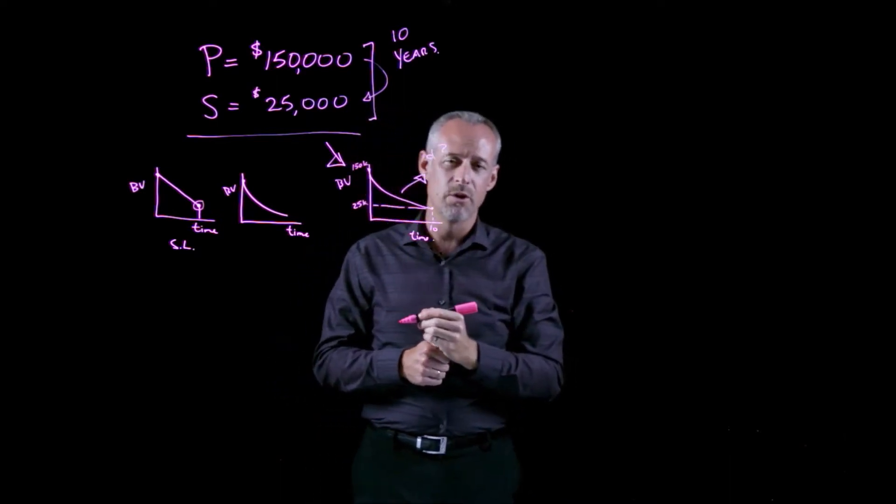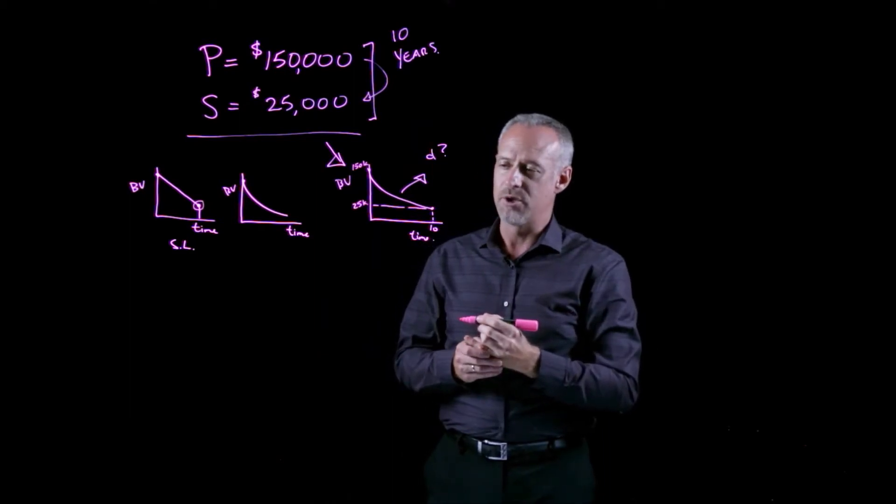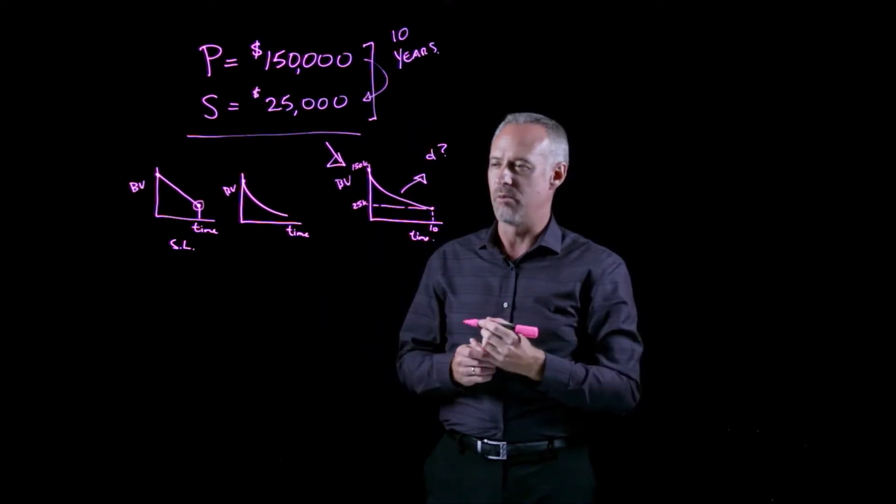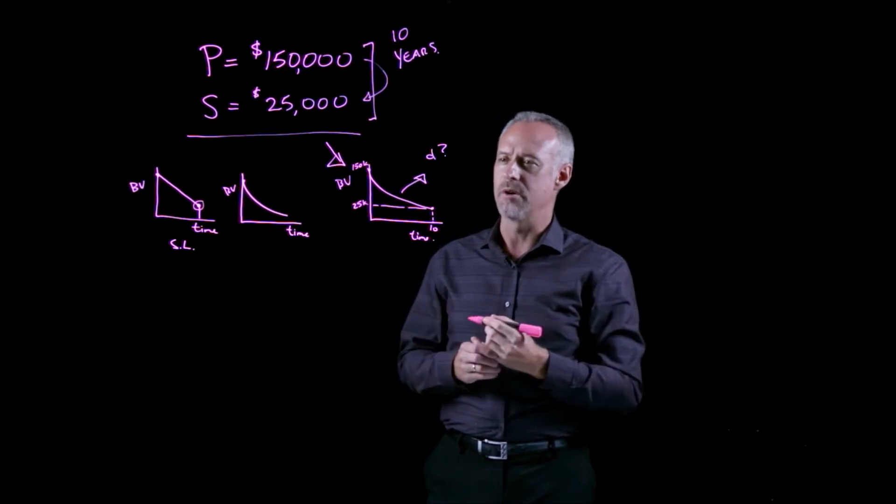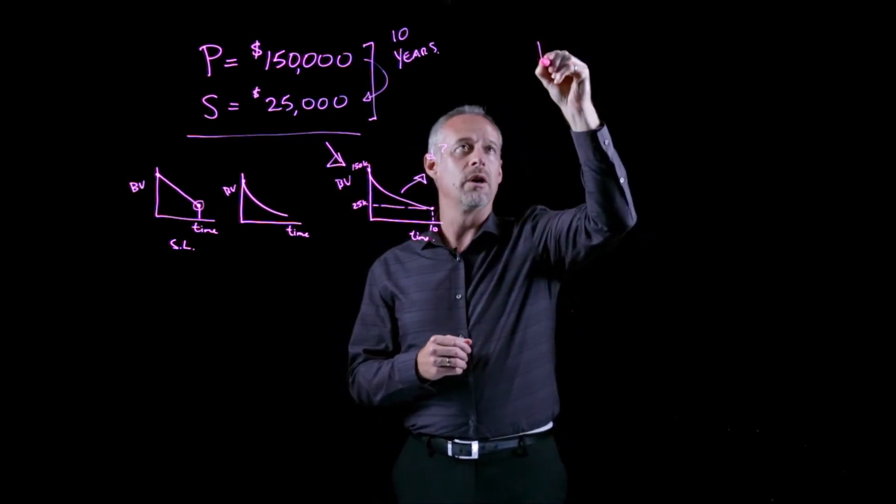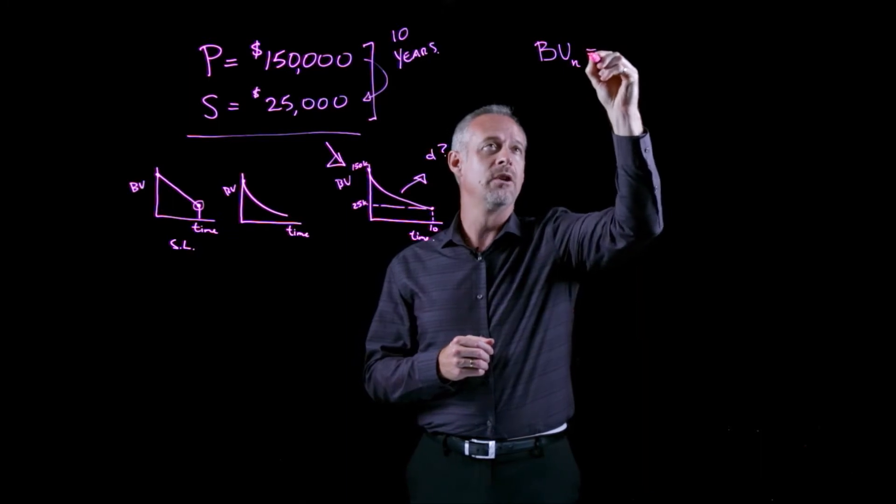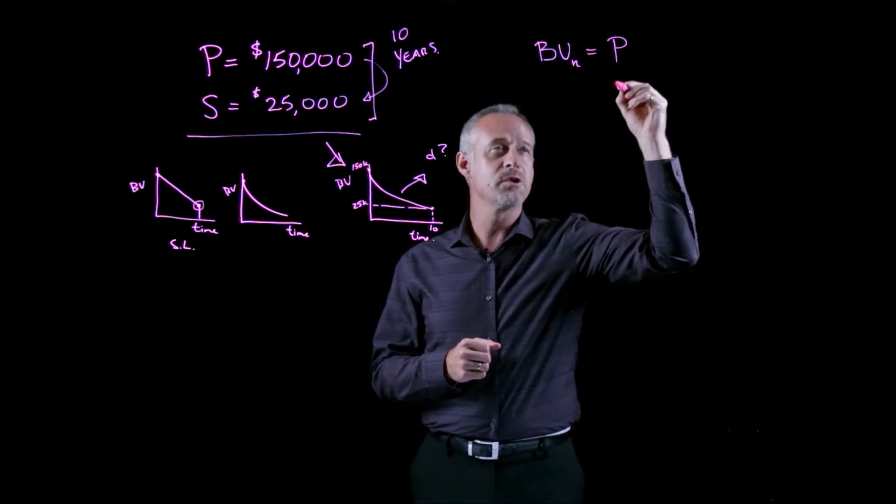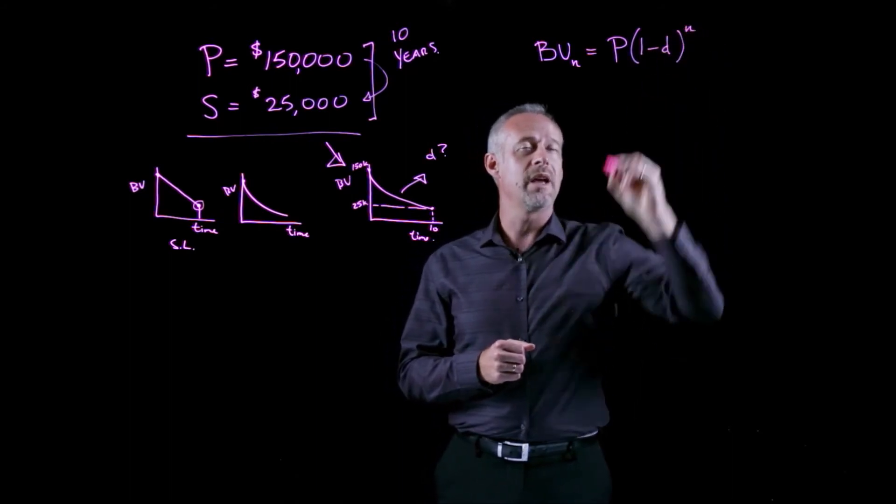Well, it's a good question. It really becomes more of a math problem than an engineering economics or an accounting problem. But perhaps the best place to start is if we look back to our formula for the book value at the end of year n, recall that that formula was the purchase price times 1 minus d to the n.